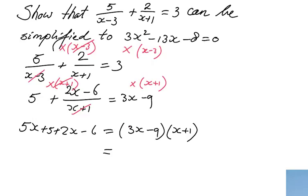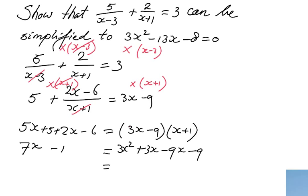Let me simplify the left side and combine the like terms. 5x plus 2x gives 7x, and 5 minus 6 is minus 1. So the left side is 7x minus 1. On the right side, we are going to use the FOIL method — I explain that in different videos. That gives us 3x squared plus 3x minus 9x minus 9, which simplifies to 3x squared minus 6x minus 9.